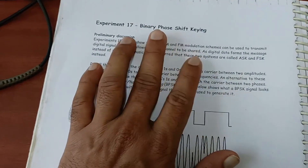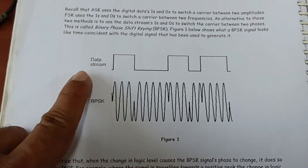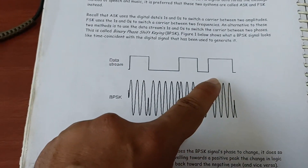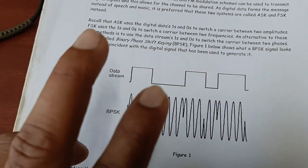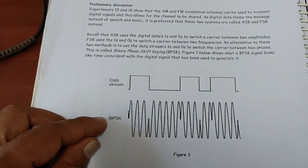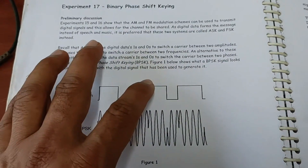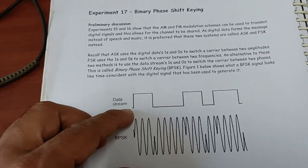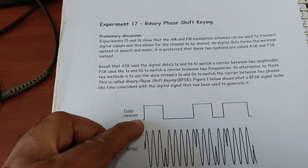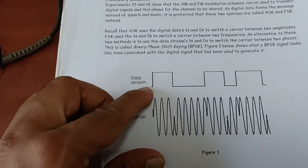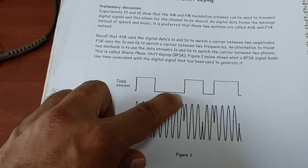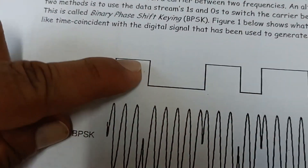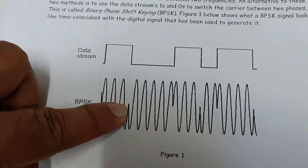In BPSK, let's look at the block diagram first. There is a phase shift keying — this is the experiment we are going to perform. The data stream is basically one-zero-one-zero binary data, and this is the BPSK signal. In BPSK we utilize minus one and one: representing zero is a 180-degree phase shift, and representing one is a zero-degree phase shift. When there is a transition from one to zero, a 180-degree phase shift occurs, and similarly from zero to one.